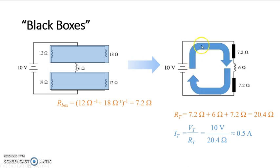The current in this circuit here is about 0.5 amps. 0.5 amps leaves the battery on this side, goes into the top box, through the 6 ohm resistor in the middle, into the bottom box, and comes back around to the negative end of the battery.